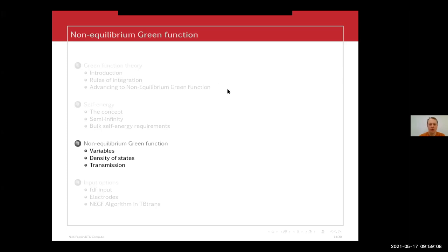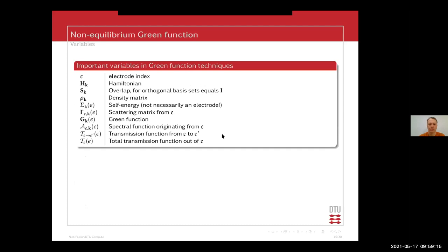We'll discuss what you can calculate with your Green's functions and some necessary variables. Here these slides contain basically all of these variables. The index e is an electrode index. You have your Hamiltonian, your overlap — which may be an identity matrix if your basis is orthogonal — your density matrix, the self-energy (which need not be an electrode; it could be some other kind of self-energy), your scattering matrix from an electrode and a Green's function, a spectral function, and the spectral density of states originating from a given electrode, which also has an electrode index.